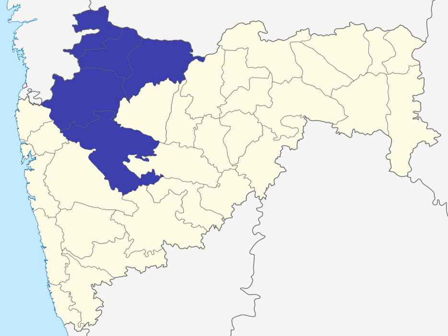There have been changes in the names of districts, and also the addition of newer districts after India gained independence in 1947 and after the state of Maharashtra was formed. Notable events include the creation of the Nandurbar district from the western and northern areas of the Dhul district. A second event includes the renaming of the erstwhile East Khandesh district as Dhul district and West Khandesh district as Jalgaon.